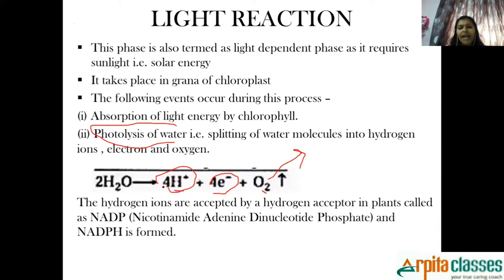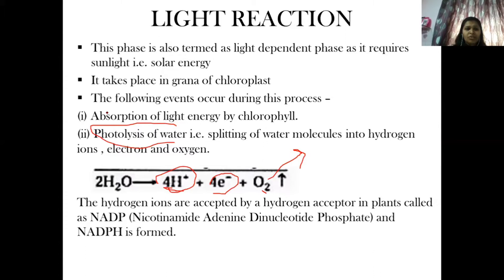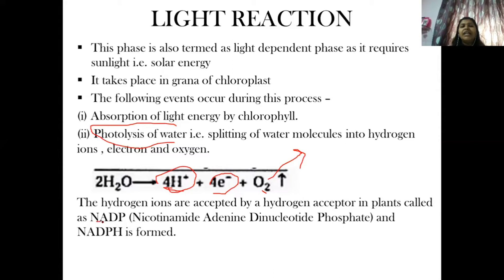Now, the hydrogen ion. This hydrogen ion is going to be accepted by a hydrogen acceptor in plants. Hydrogen acceptor means it is going to combine with hydrogen ion. This hydrogen ion is going to react with the hydrogen acceptor in the plant. And what is that hydrogen acceptor in the plant? NADP molecule — nicotinamide adenine dinucleotide phosphate.